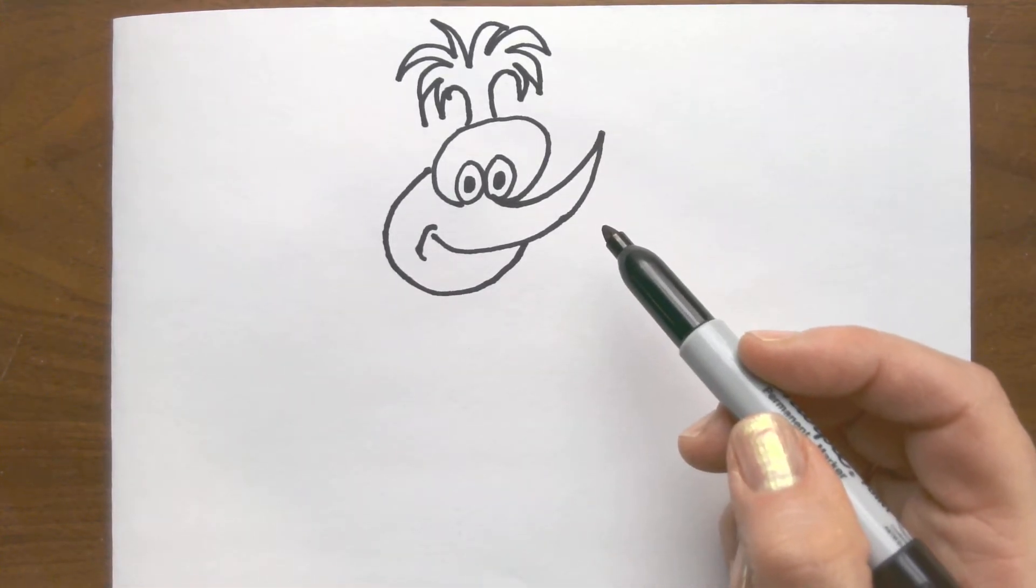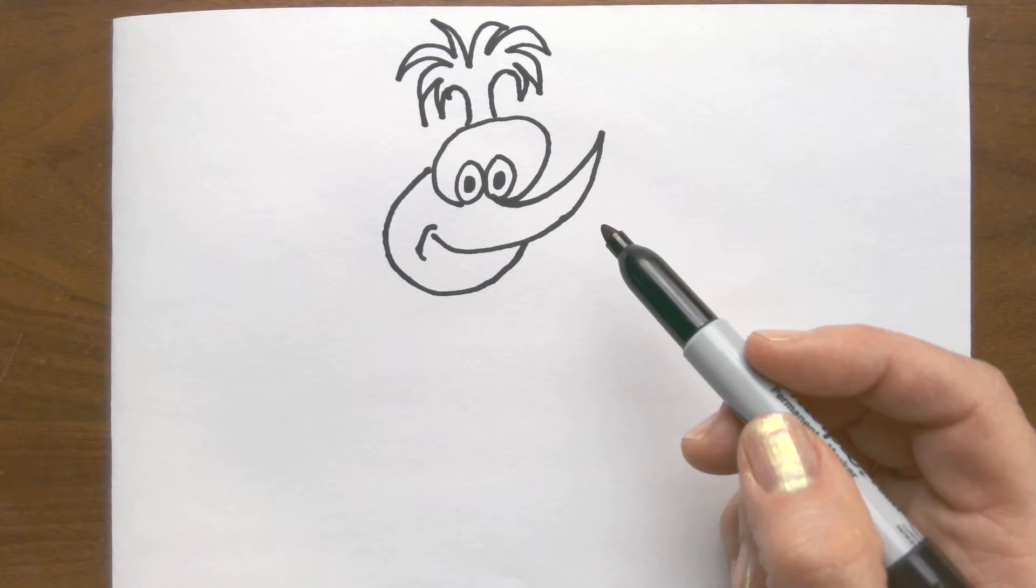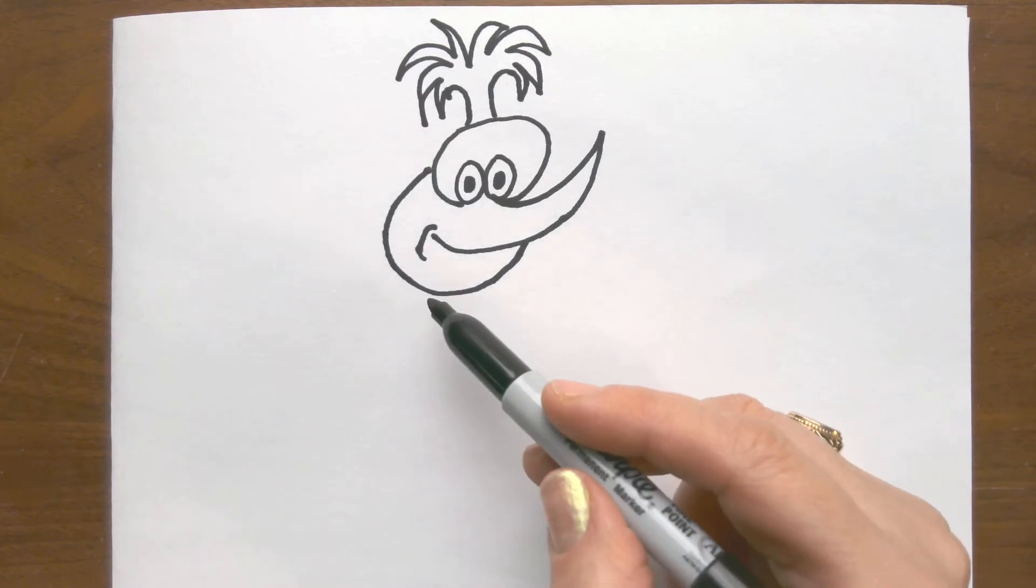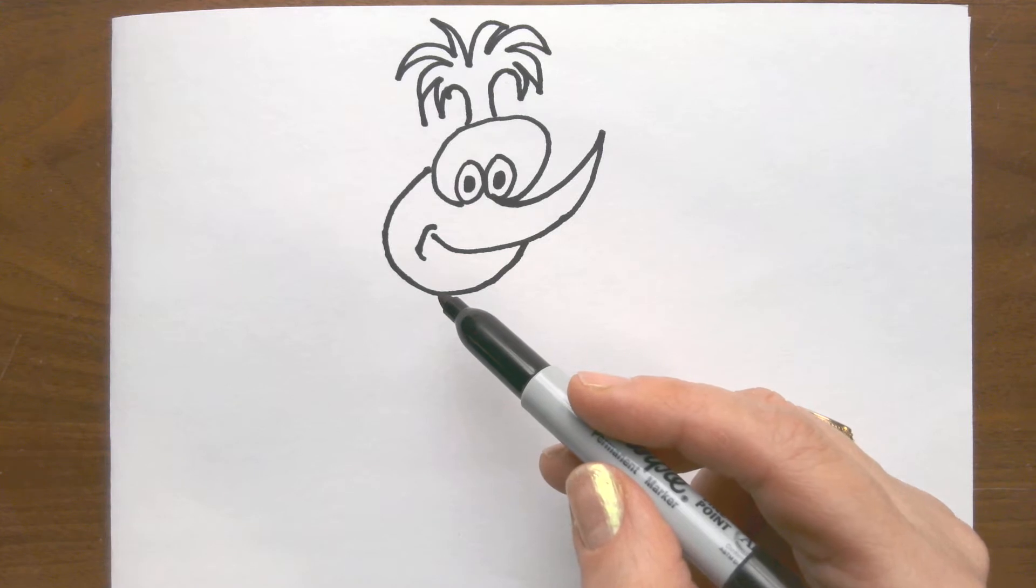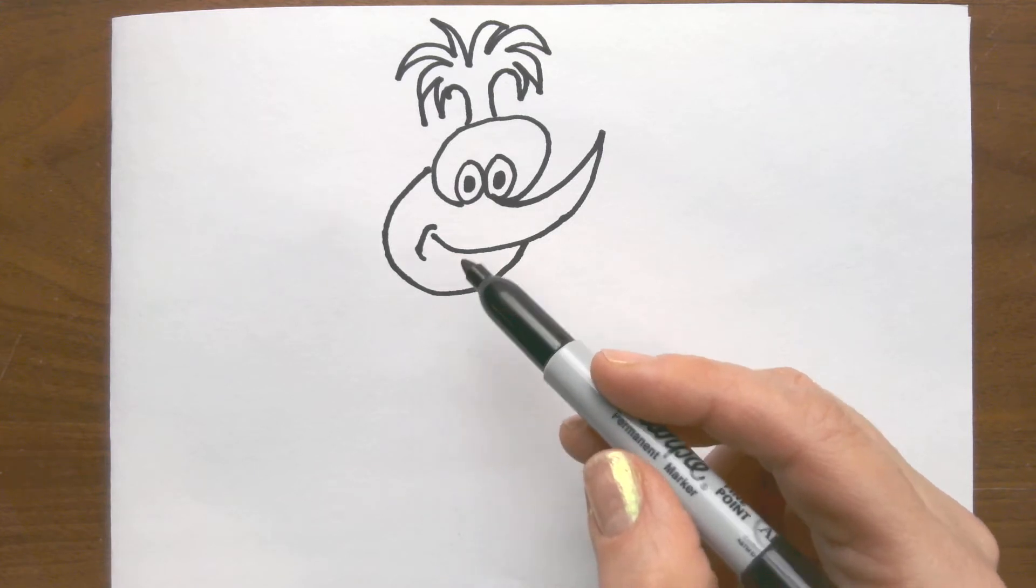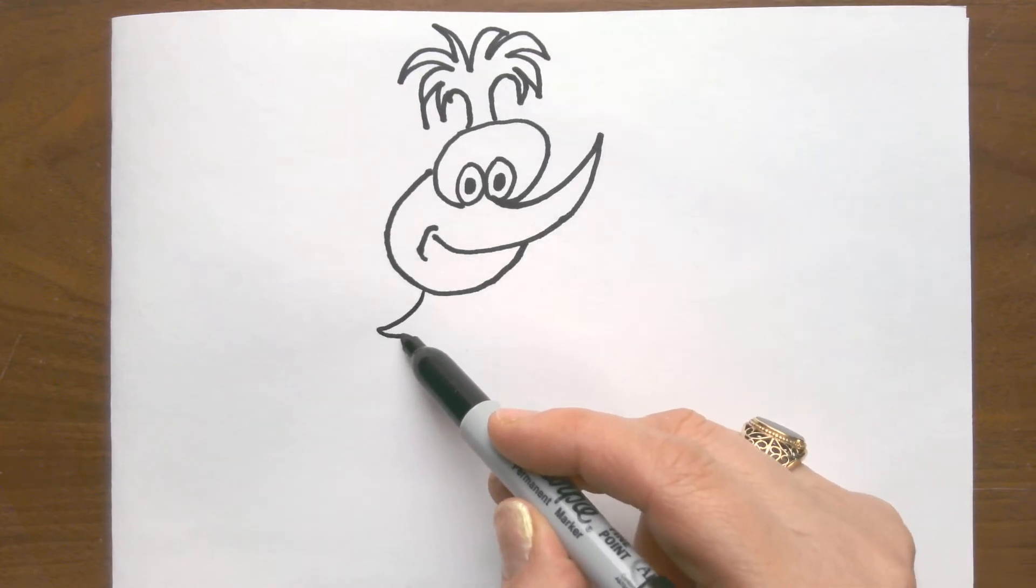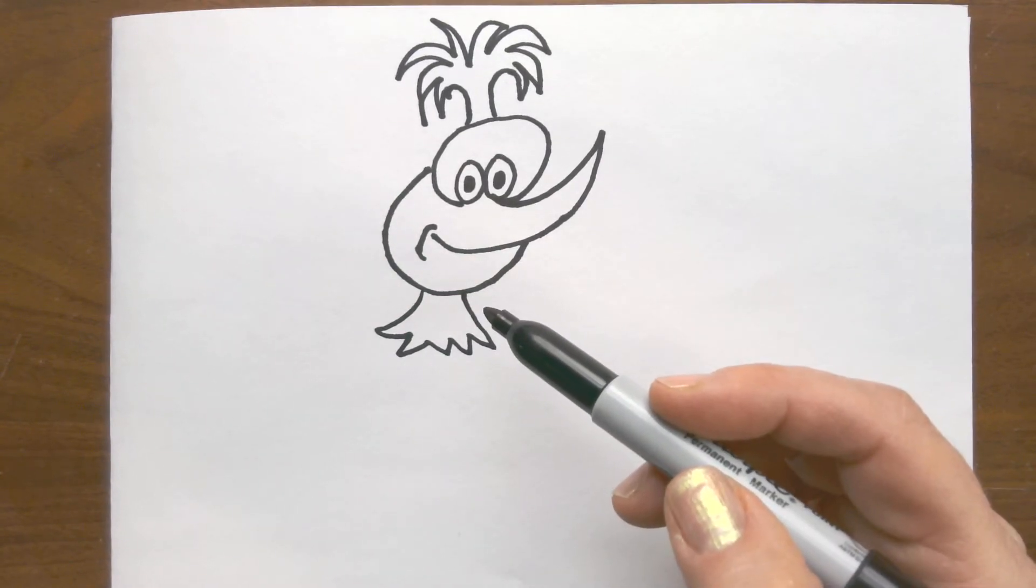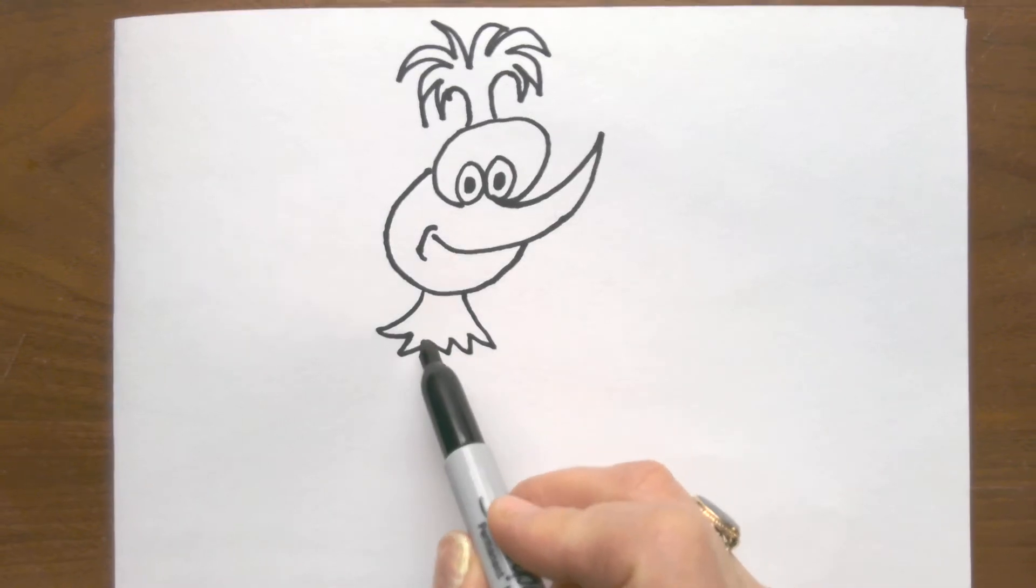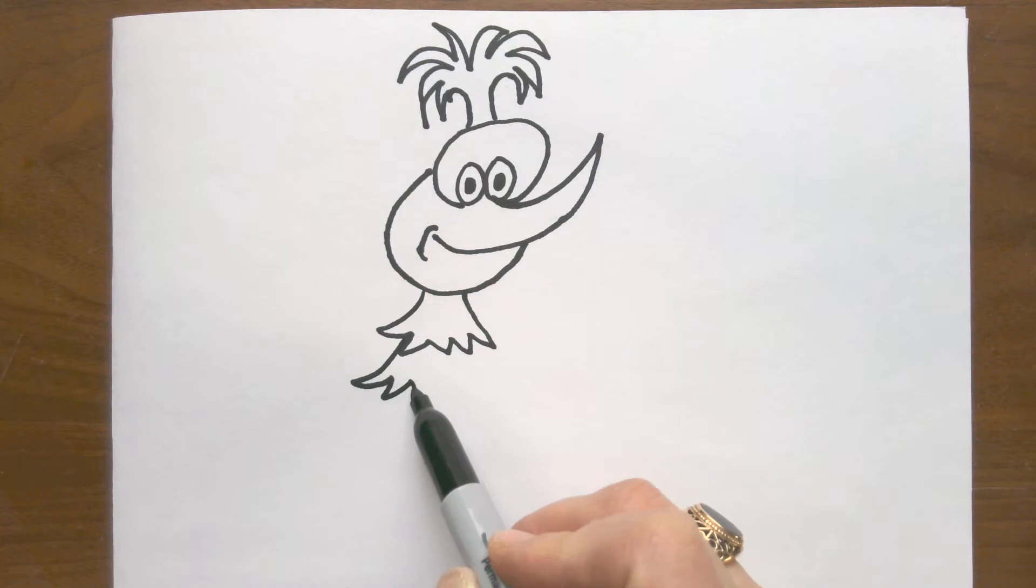Now for our canary-type bird, we're going to decorate the bottom part. The bottom part can be as many pieces as you want. We're going to start by drawing a zigzag line, and I'm keeping it narrow because I want room for it to be a tall neck.